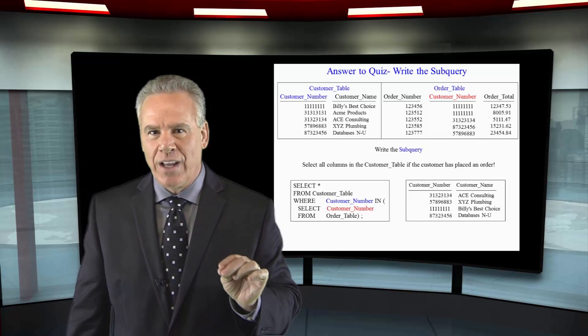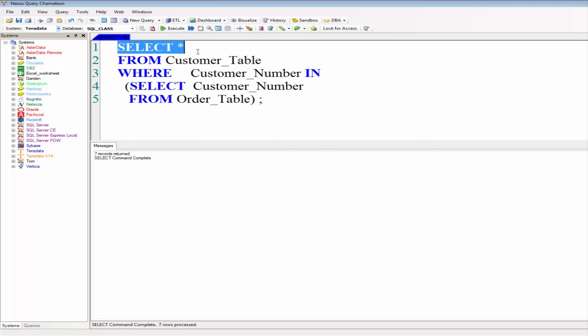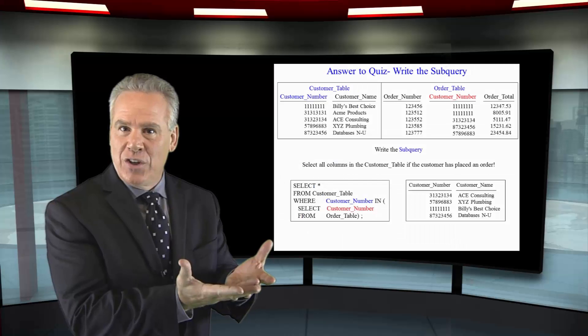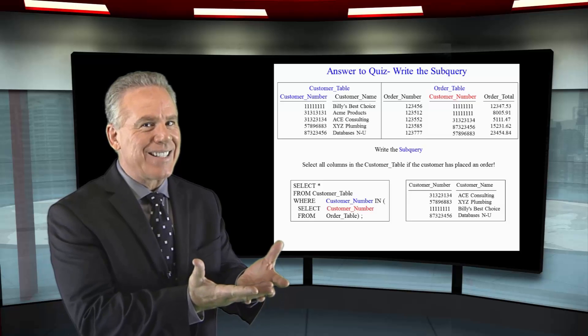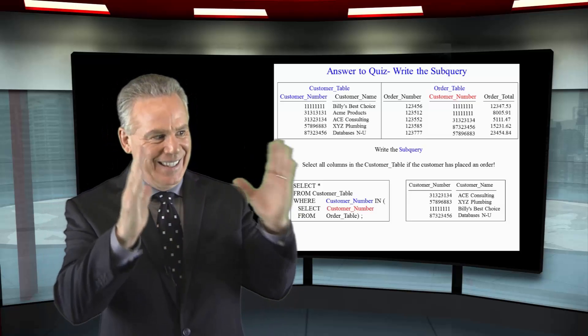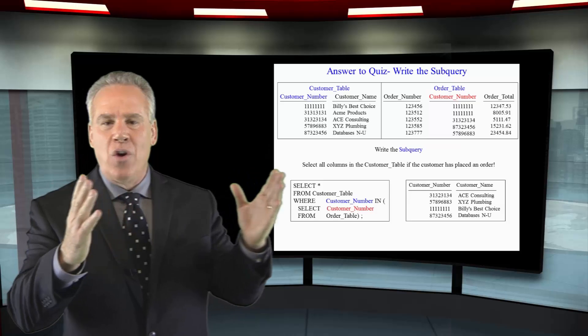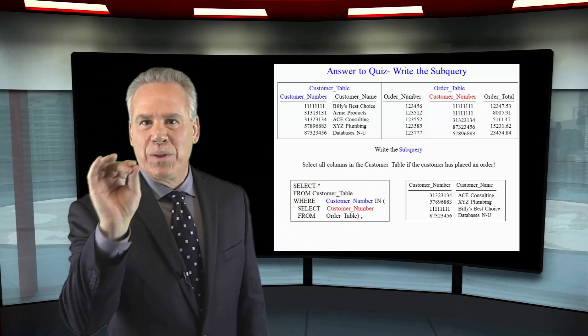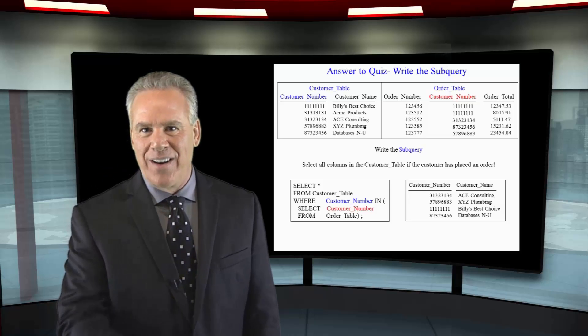Now, look at your answer. Select asterisk from customer table where customer number was in. Select customer number from order table. Now, all of the customer numbers of the customers who've placed an order are going to be passed up and built in that list at the top, and now you're only going to see the customers from the customer table that have placed an order. Nice work.